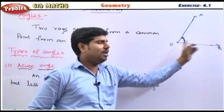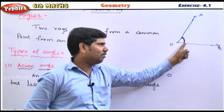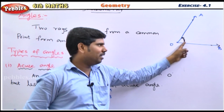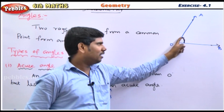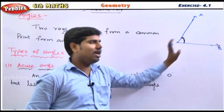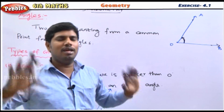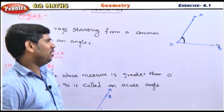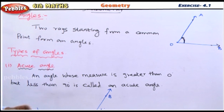OA and OB are rays. The two rays starting from a common point form an angle. Now, one topic is the type of angles.